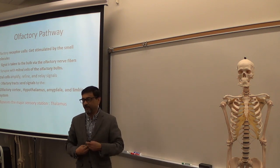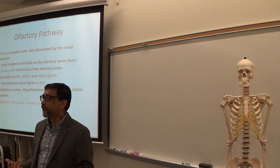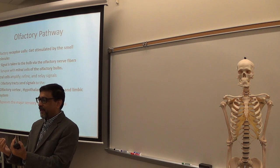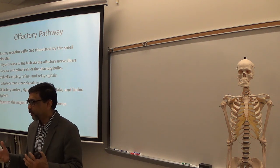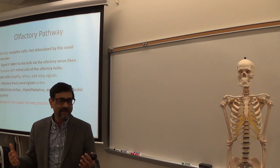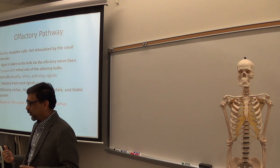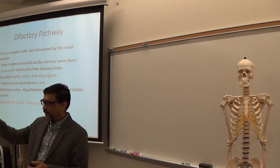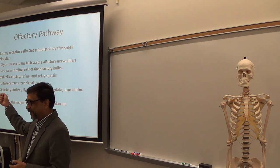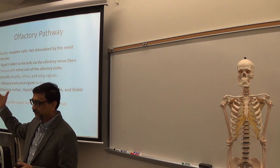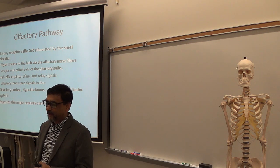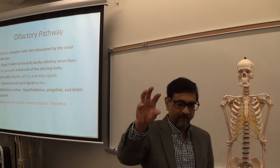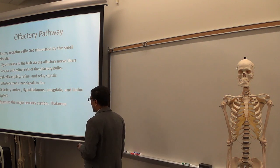The amygdala and limbic system are responsible for olfactory emotion. For example, when a small infant cries during sleep, if the mother goes close, the baby stops crying because the baby can smell the mother's body — an emotional connection. Similarly, if you taste or smell your mom's cooking after 30 years, you can get emotional. Olfaction is very much related to memory and emotion.